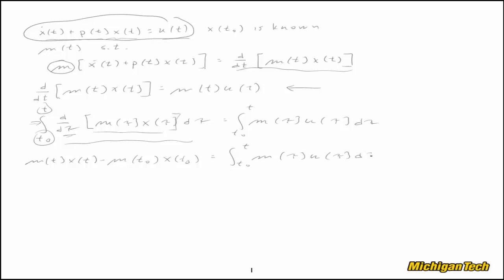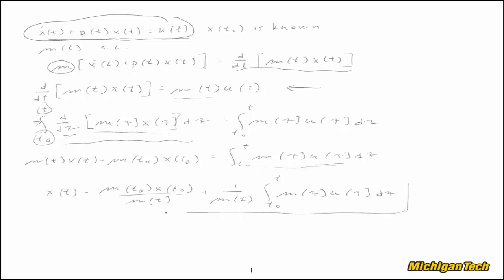Presumably we know u(t), so we just have to take u(τ), multiply it by the integrating factor m(τ), and perform the integration to get a closed-form expression on the right-hand side. Then we solve for x(t): x(t) equals m(t₀)·x(t₀) divided by m(t), plus 1/m(t) times the integral from t₀ to t of m(τ)·u(τ) dτ. That is the solution to the differential equation.